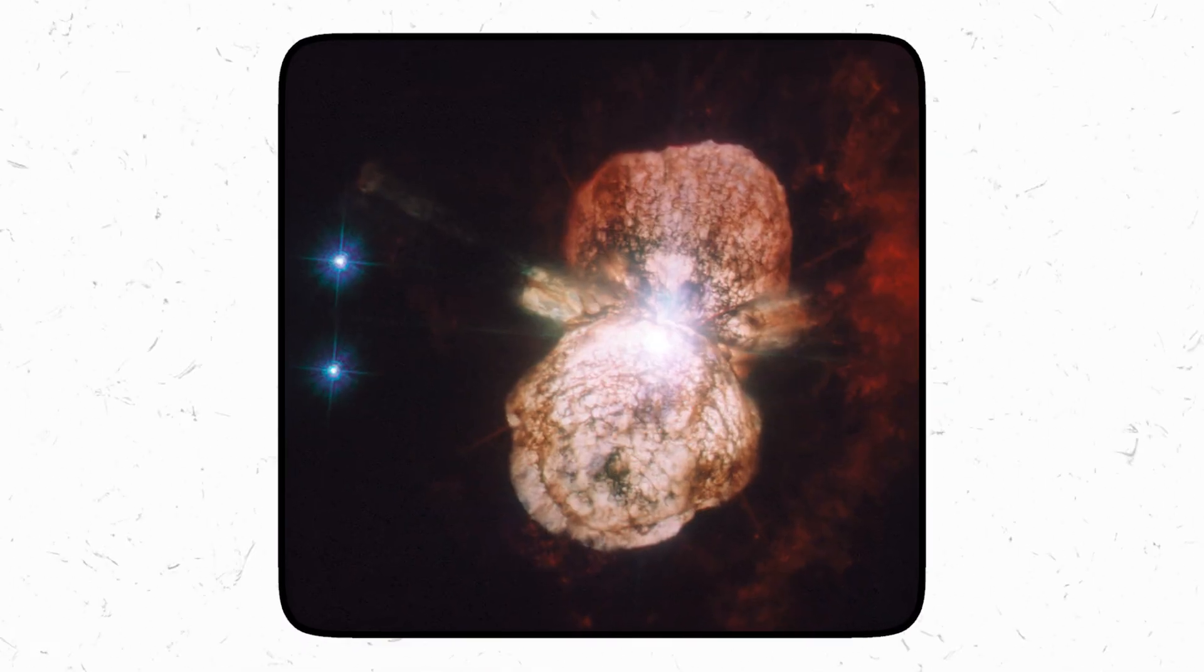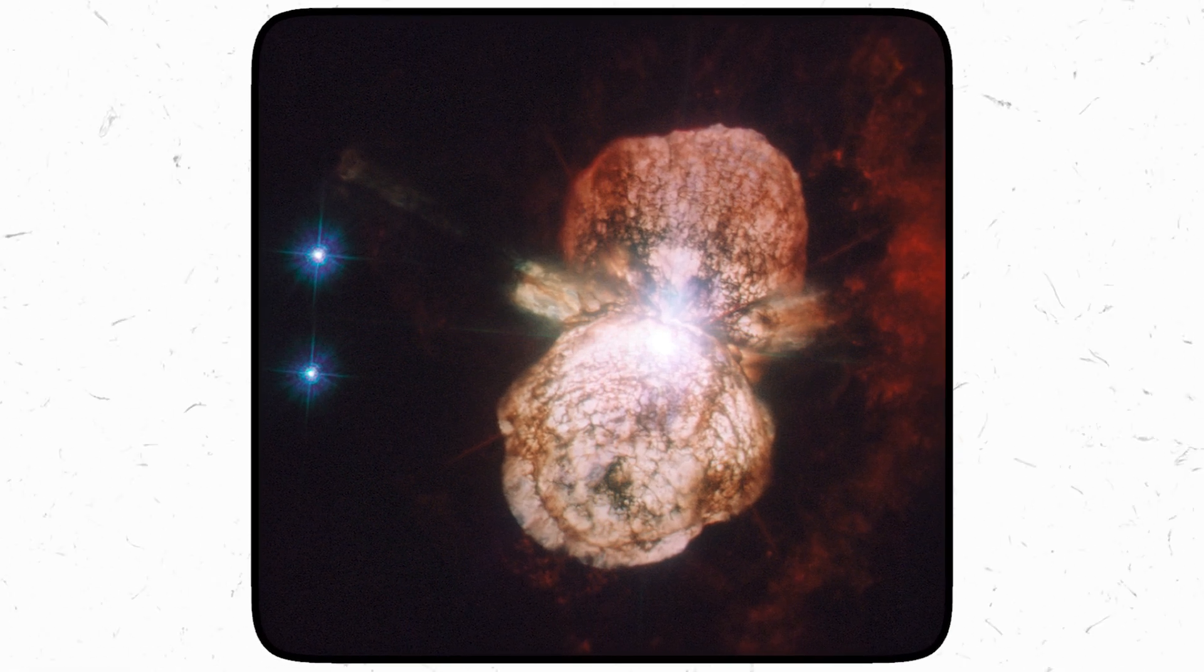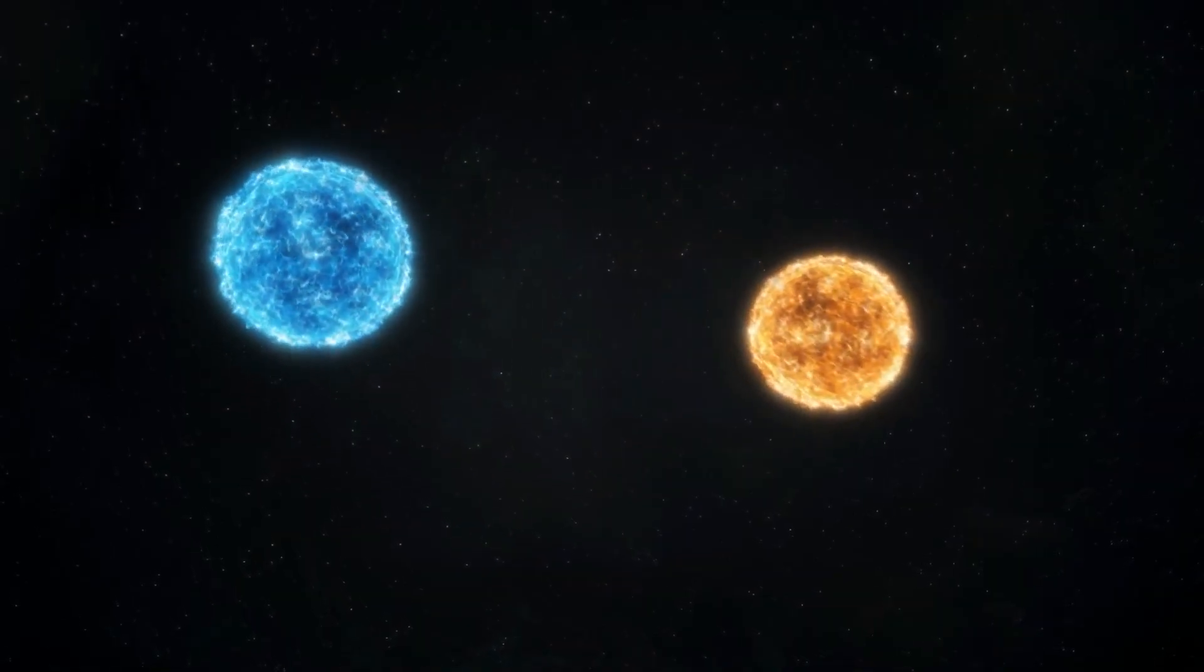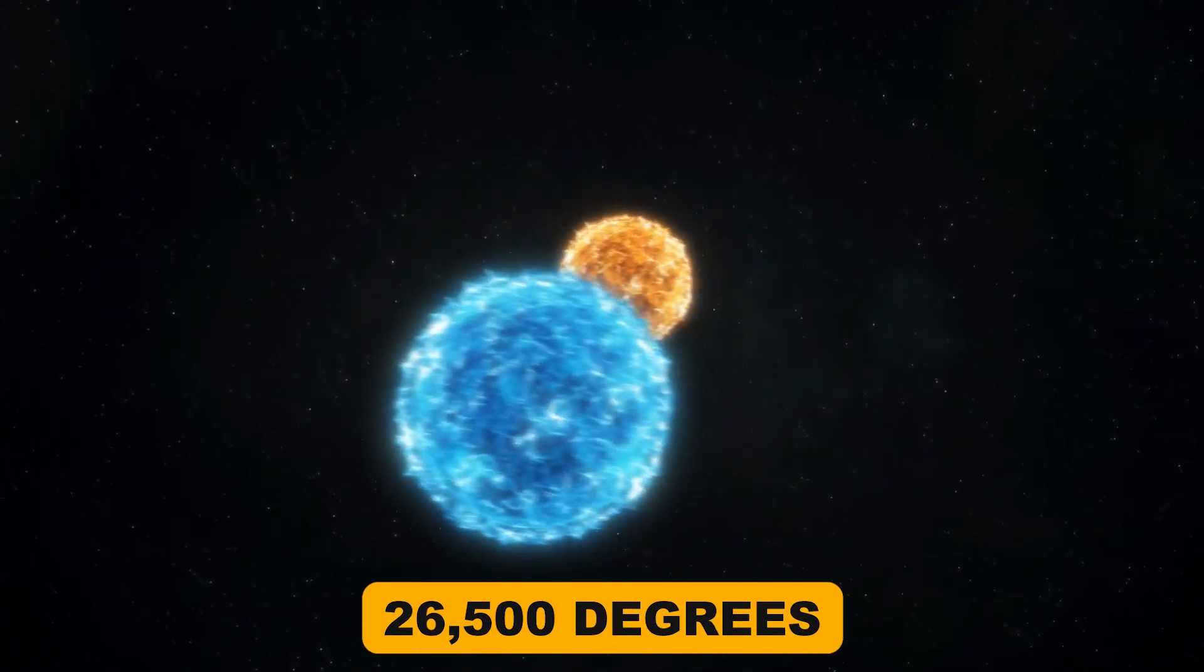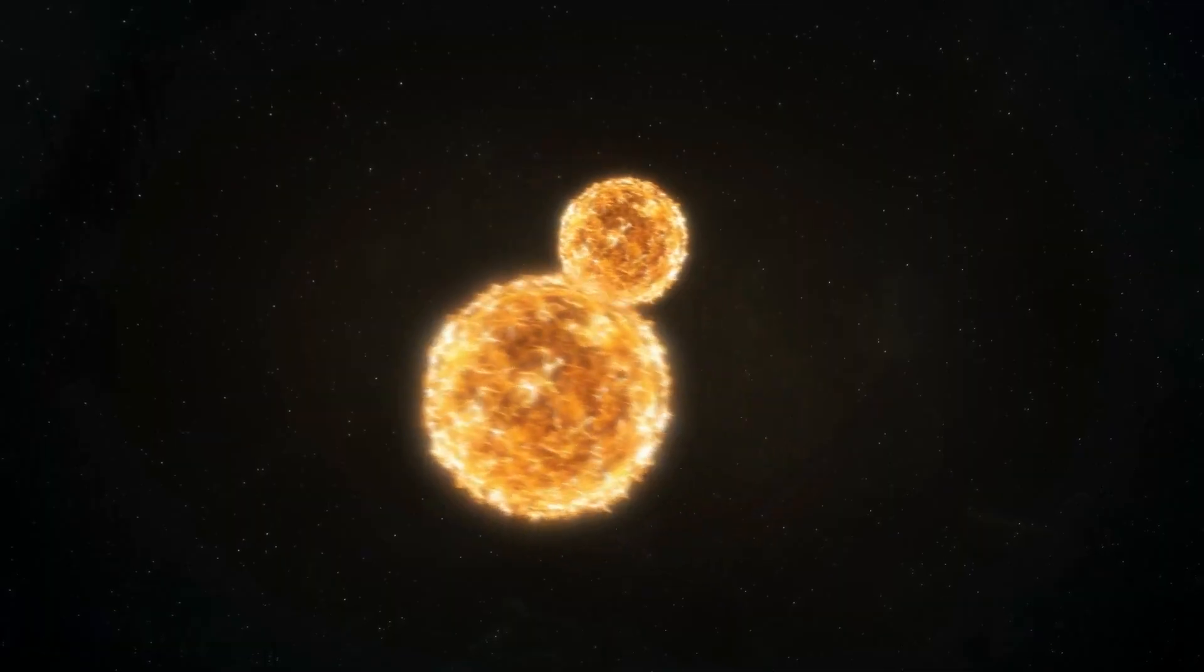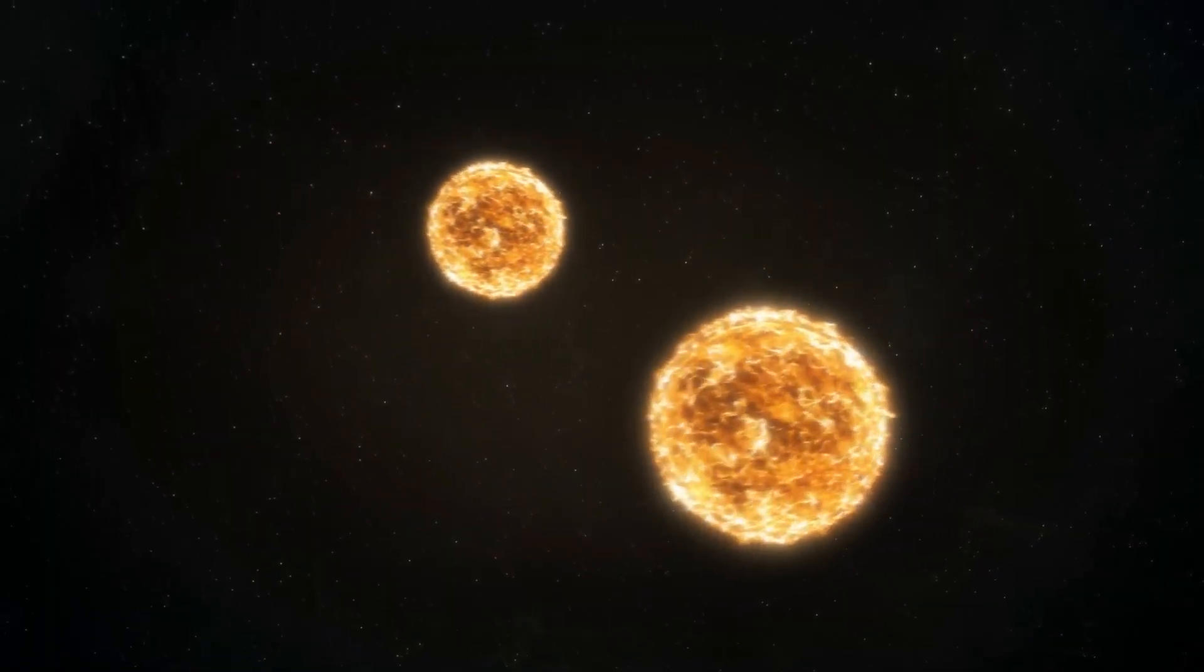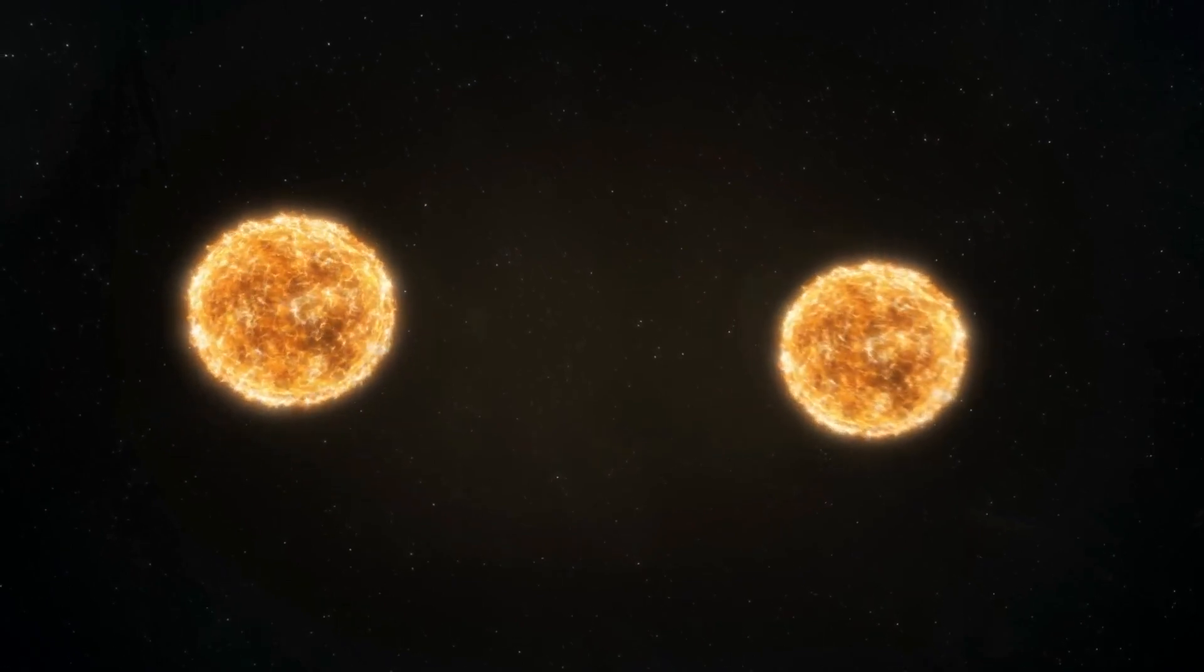Eta Carinae is a binary star system. That means there are two stars that orbit around each other. One component has a temperature of about 26,500 degrees and the other 62,500 degrees. The main star in the Eta Carinae system, which is the more massive of the two, is a hundred times heavier than our Sun.